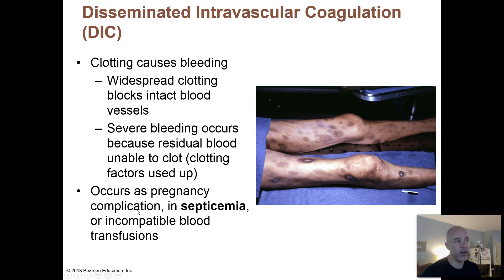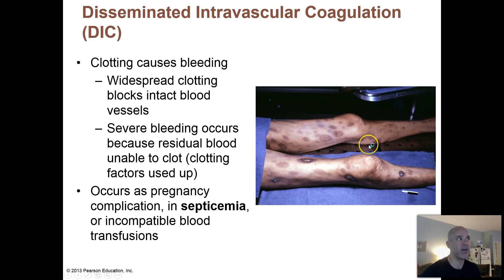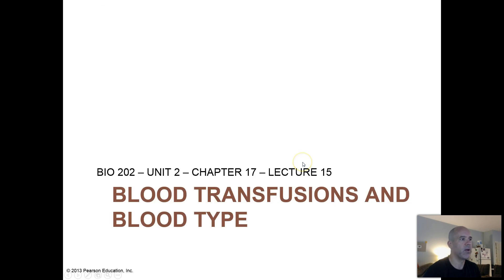Interestingly, DIC can occur as a pregnancy complication. Septicemia — where you have microorganisms, usually bacteria, in your blood — triggers inflammation, which can set off disseminated intravascular coagulation. Incompatible blood transfusions — getting the wrong blood type — are something else that can cause this. So this can be pretty bad news and can ultimately kill patients in some cases. Next video lecture, the last for chapter 17, we're going to talk about blood transfusions, blood type, and what happens if you get the wrong type of blood.